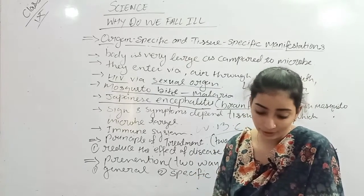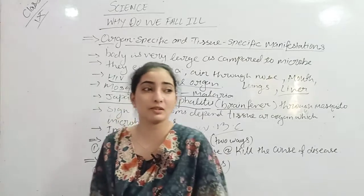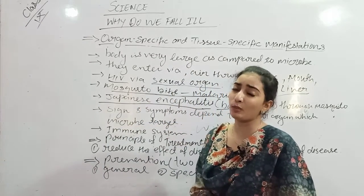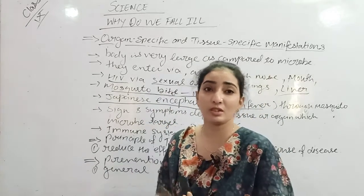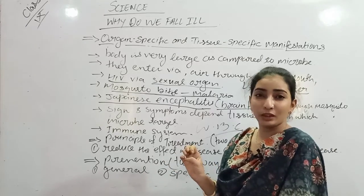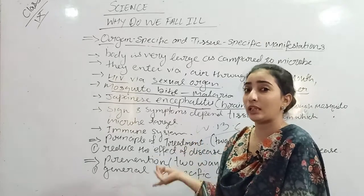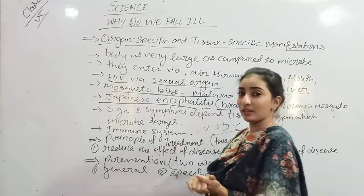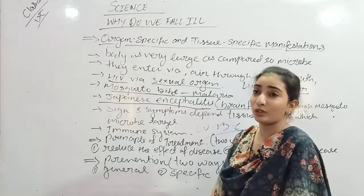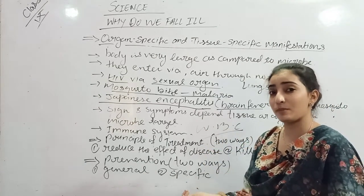Now we need to understand specific prevention. For example, smallpox - a hundred years ago this disease affected a lot of people and spread from one person to another. Today, when we give children vaccines and vaccinations at the right time, and then when a virus or bacteria comes to attack, that disease cannot happen because already the first vaccination was given.